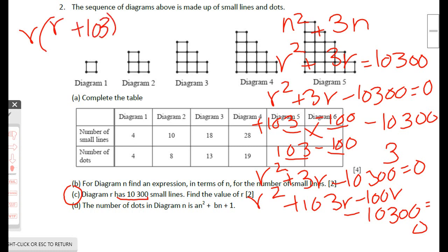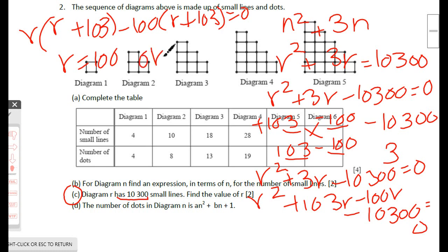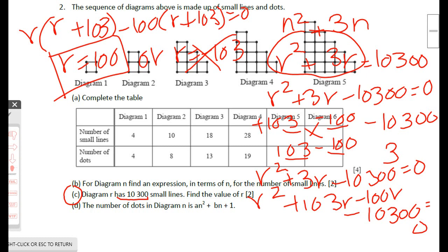Factoring: r(r + 103) − 100(r + 103) = 0, giving (r − 100)(r + 103) = 0. So r = 100 or r = −103. Since the diagram number cannot be negative, r = 100 is the answer. You can verify by substituting r = 100 into r² + 3r to confirm you get 10,300.